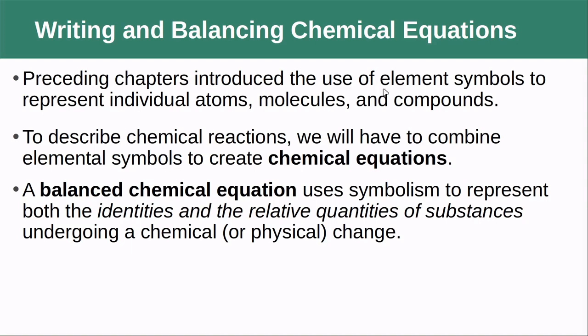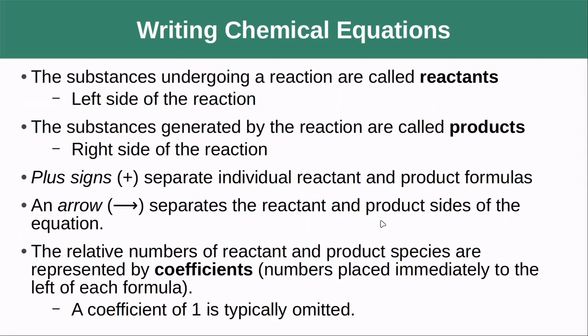So far we've learned how to write elemental symbols and we can represent individual atoms, molecules, and compounds. We can represent different chemical species but we don't have any way of representing yet a chemical reaction, the change that occurs for these different chemical species. To do that we're going to need chemical equations. A balanced chemical equation uses symbolism to represent both the identities and relative quantities of substances undergoing a chemical or physical change.